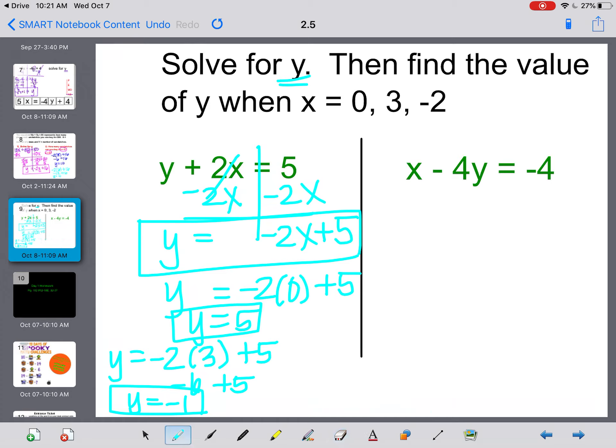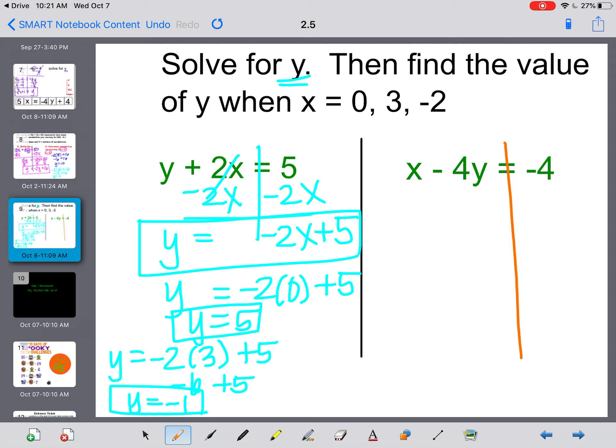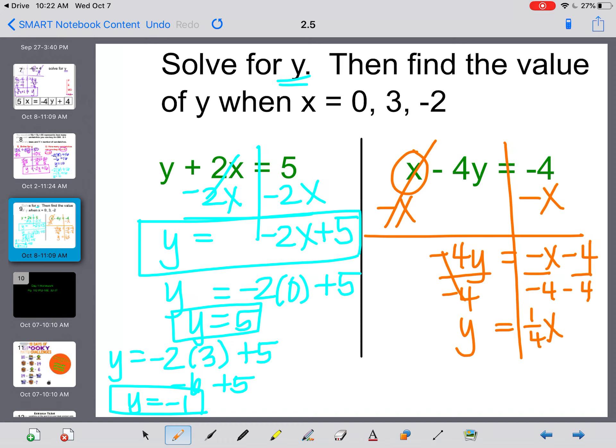I'm going to erase this last one just so we have a little space for our next problem. So if I'm trying to get y by itself, I need to get rid of this x. In order to cancel out a positive x, I need a negative x. So I'm going to subtract x from both sides. That leaves me with negative 4y equals negative x minus 4. And now I have to divide these to separate them. So I'm dividing everything by negative 4, which tells me that y is equal to 1 fourth x positive, because those were two negatives being divided, and then plus 1.